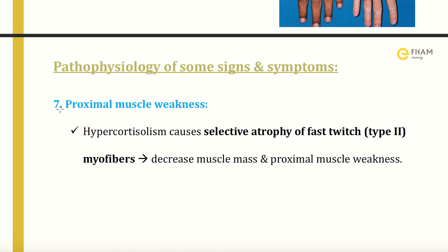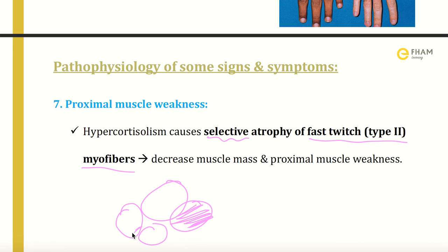The seventh sign is proximal muscle weakness. Hypercortisolism causes selective atrophy of fast-twitch type 2 muscle myofibers. We have type 1 (slow-twitch, dark) and type 2 (fast-twitch, light). Hypercortisolism selectively atrophies type 2 myofibers, which are located mainly in proximal muscles. That is why we see proximal muscle weakness specifically. And that concludes the video — thank you very much.